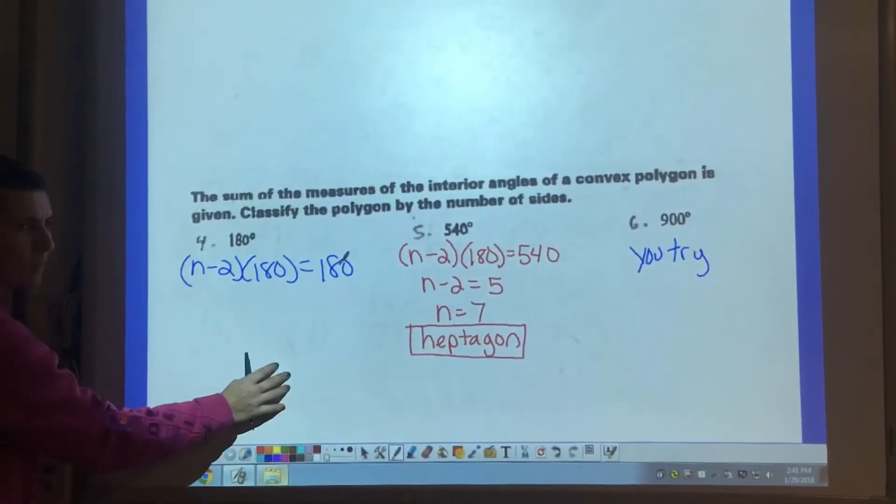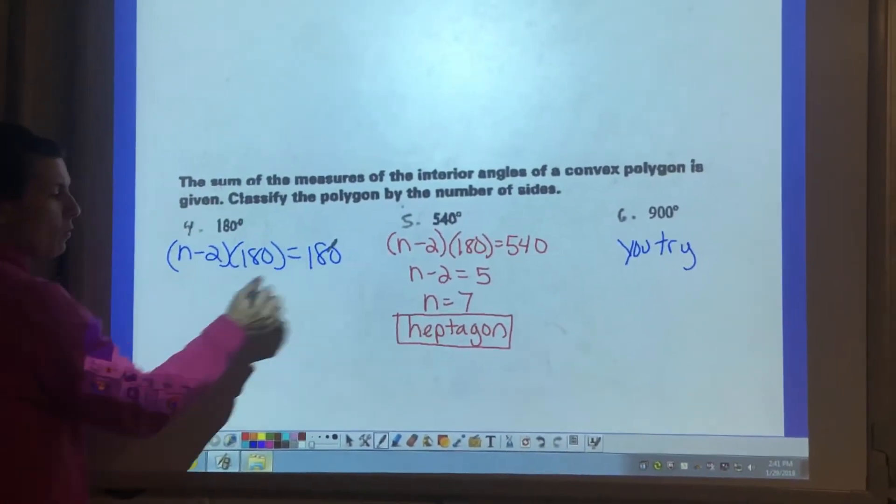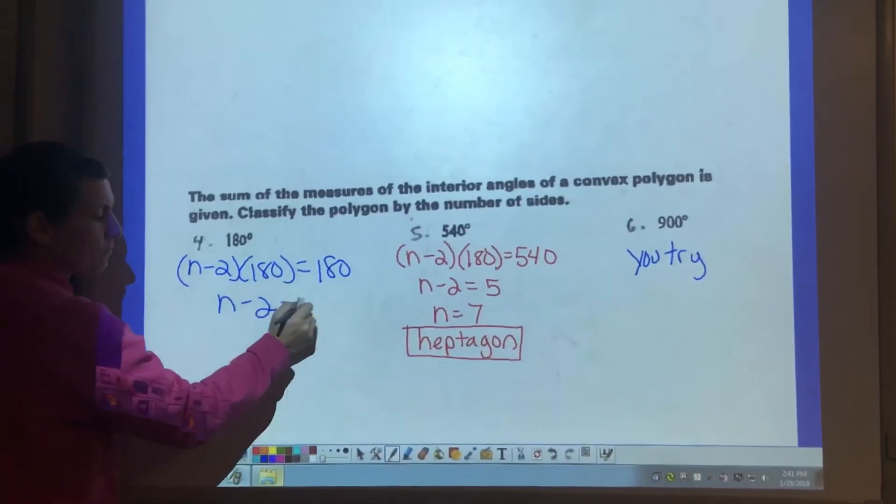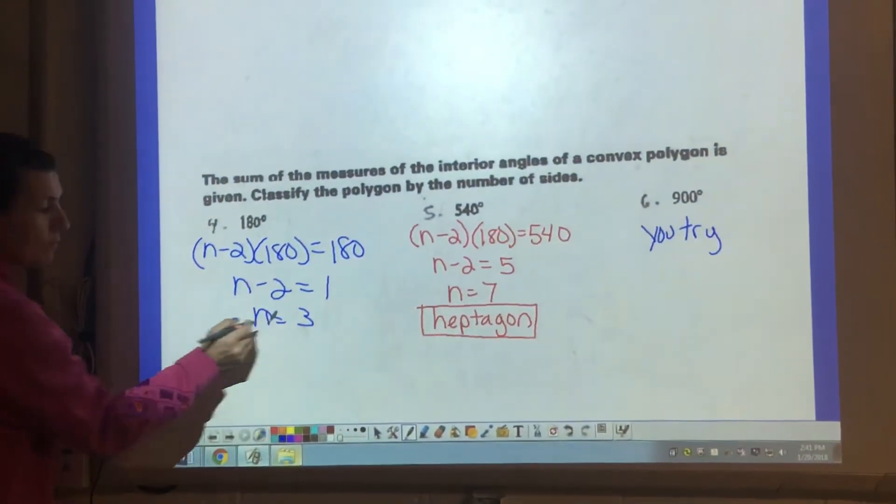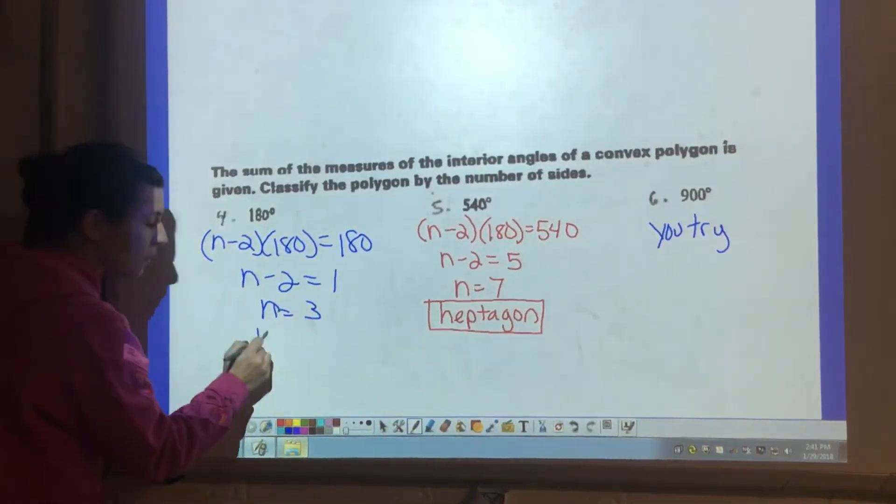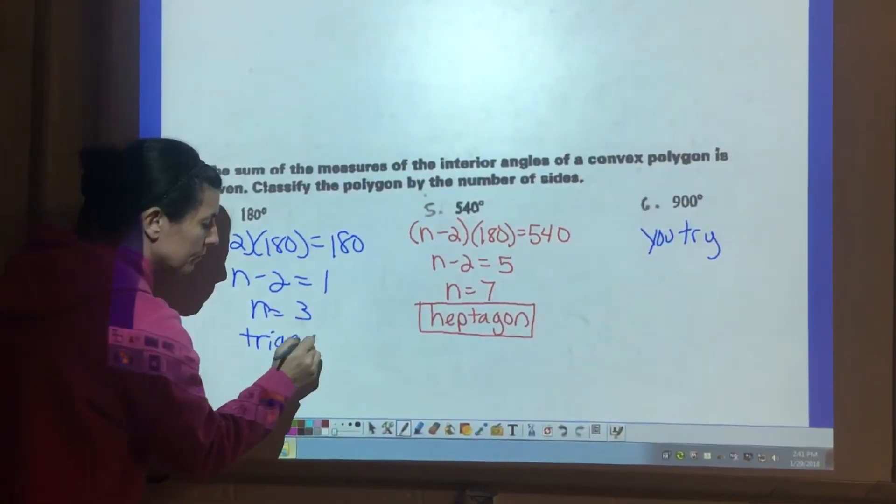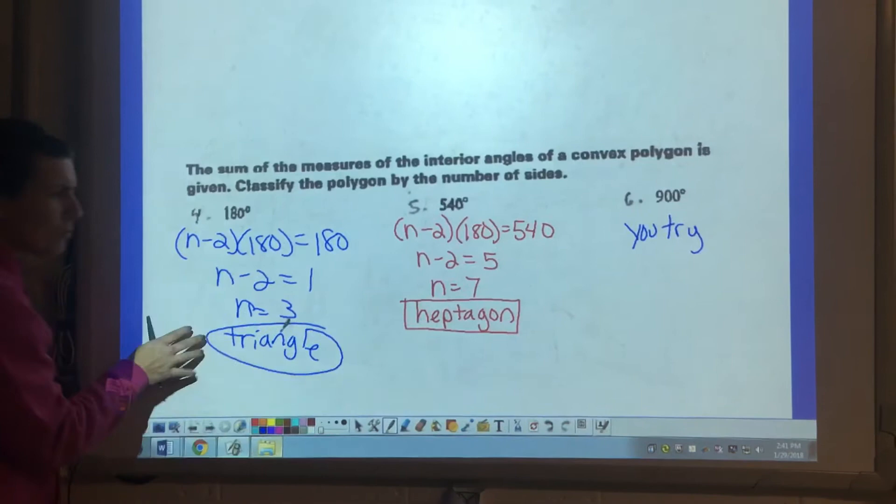So we want to have n equals something at the bottom. I'm going to divide by 180 first, and then I'm going to add two. So we know that this figure has three sides, which we know is called a triangle. That one was an easier problem.